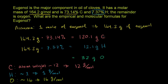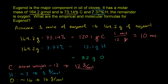Now we have the grams of each element, and we can use the molar masses to find how many moles each represents. For carbon: 120.1 grams divided by 12 grams per mole — or equivalently, 120.1 times (1 mole / 12 grams) — gives us 10 moles of carbon. So we know we have 10 moles of carbon in one mole of eugenol.